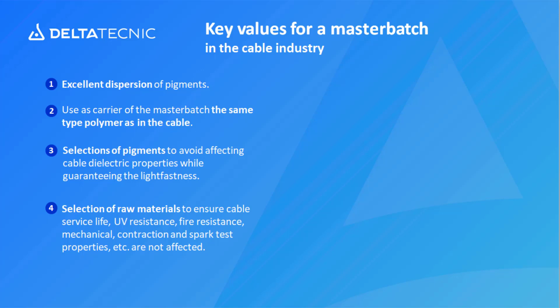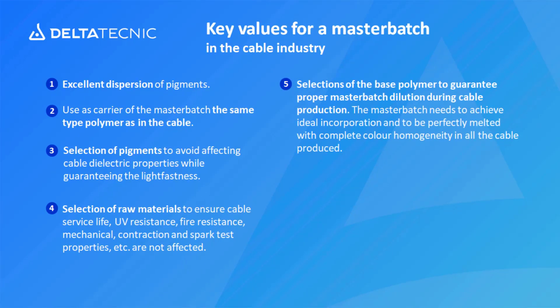Point five: the selection of a base polymer to guarantee proper masterbatch dilution during cable production. The masterbatch needs to achieve ideal incorporation and be perfectly melted with complete color homogeneity in all the cables produced. The polymer is critical, but also the additives in the formulation — be it a plasticizer, a stabilizer, or whatever other additives are used — to guarantee the perfect dilution of the masterbatch during the plastics transformation process. This is a key point of this presentation and we'll go deeper into it further on.